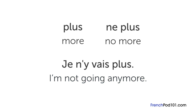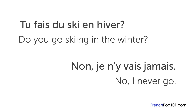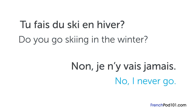There are also negative words in French that can be used on their own or with ne. For example, let's look at this short conversation. Your friend asks you, Tu fais du ski en hiver? — Do you go skiing in the winter? You can respond: Non, je n'y vais jamais — No, I never go. Here, the word jamais, meaning 'never,' is used with ne.